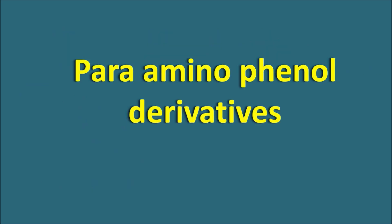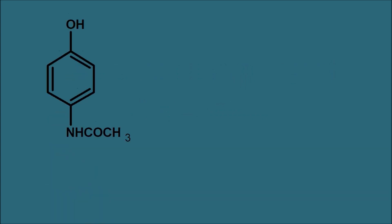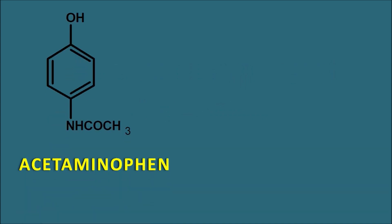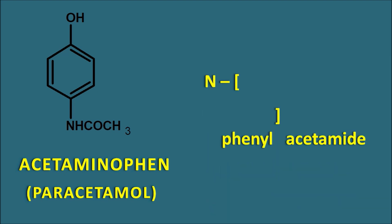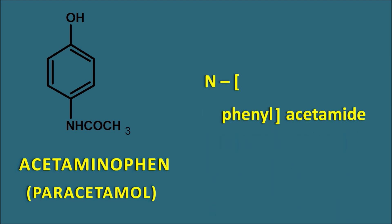The next class is the para-aminophenyl derivatives. One of the well-known drugs is acetaminophen, also called paracetamol. It simply has an acetamide moiety attached with a phenyl group at the nitrogen — it is an N-phenyl acetamide. This phenyl group has a 4-hydroxy group, so N-(4-hydroxyphenyl)acetamide is nothing but acetaminophen.